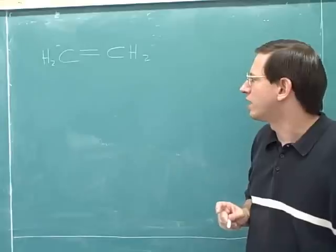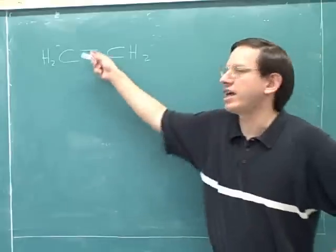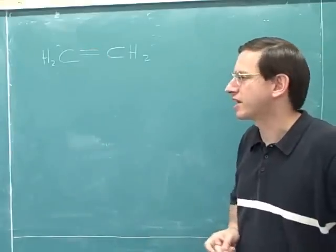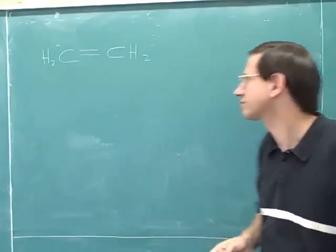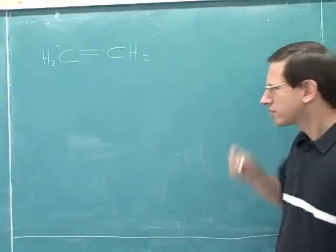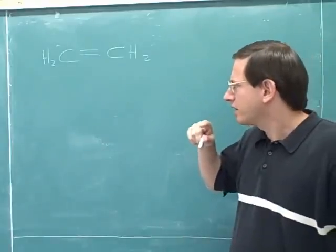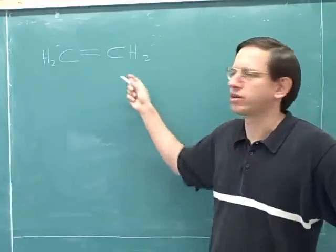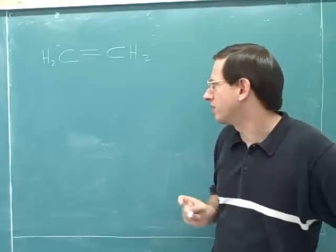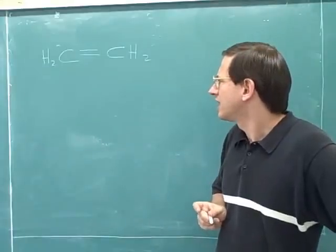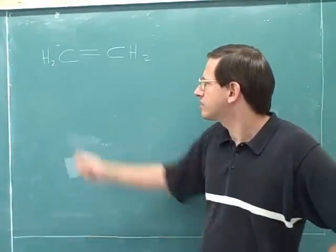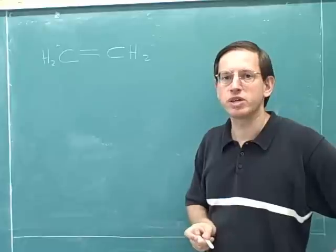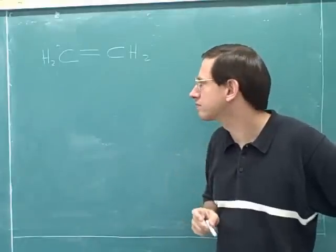Let's start with this molecule of ethene, or as it would usually be called, acetylene. Let's try drawing a little bit more what the orbitals look like around the carbons here. What's the hybridization of the carbons? Both of these carbons are sp2 hybridized carbons.